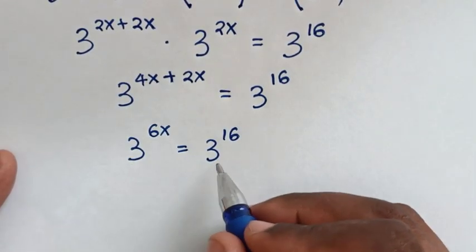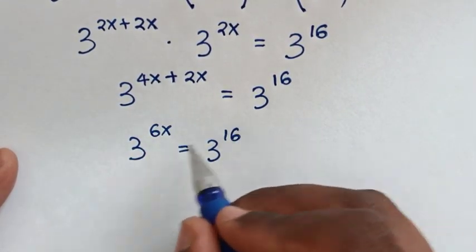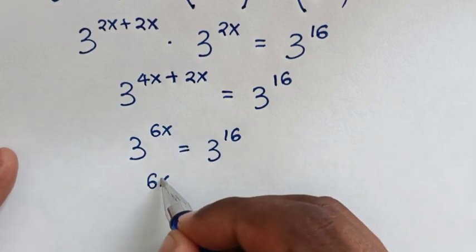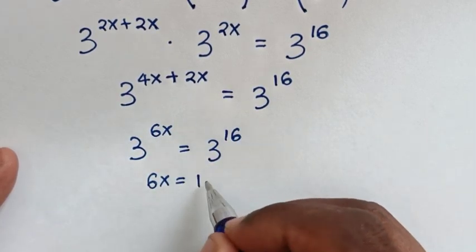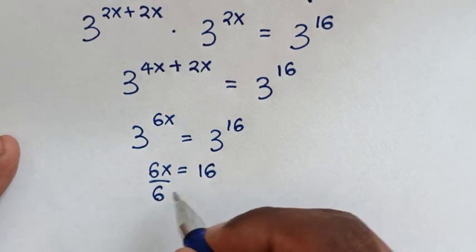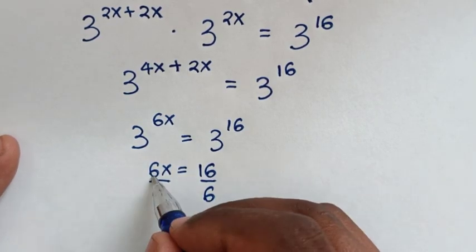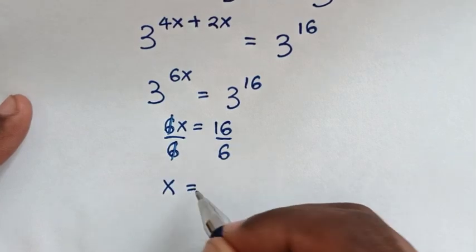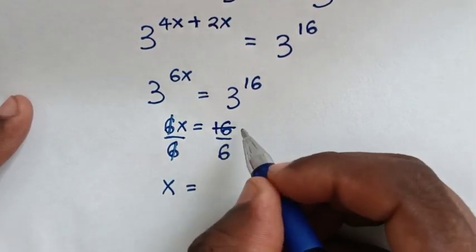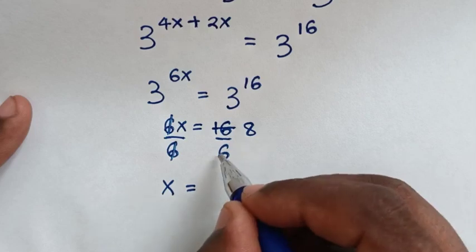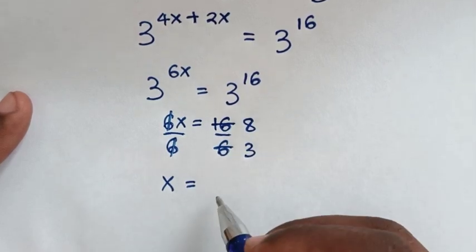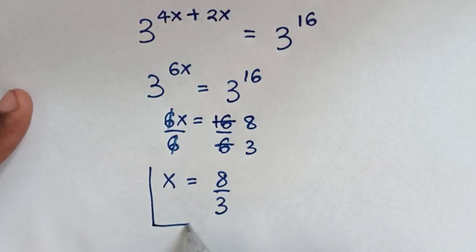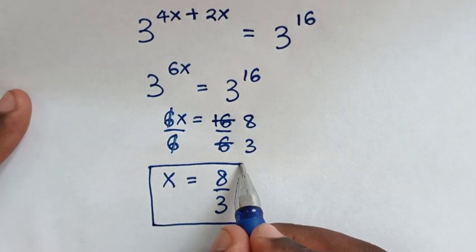Now, here we have the same base of 3, so we compare the powers. It will be 4x plus 2x, which is 6x, equal to 16. We divide by 6 on both sides, so it will be x equals 16 over 6. To simplify, 16 divided by 2 is 8, and 6 divided by 2 is 3. So x equals 8 over 3. This is the final answer for the value of x in this problem.